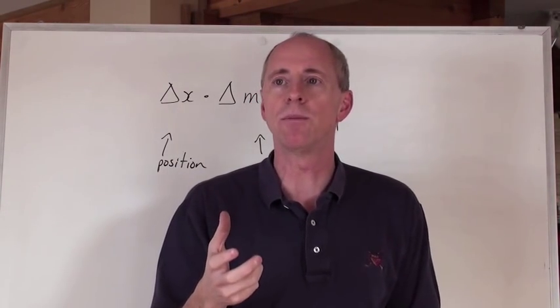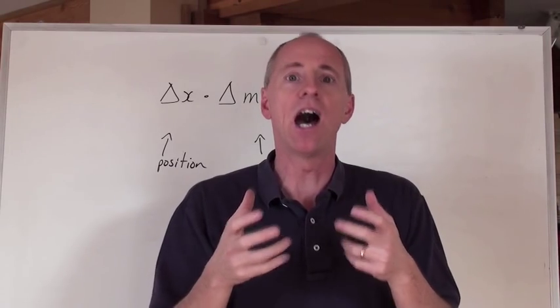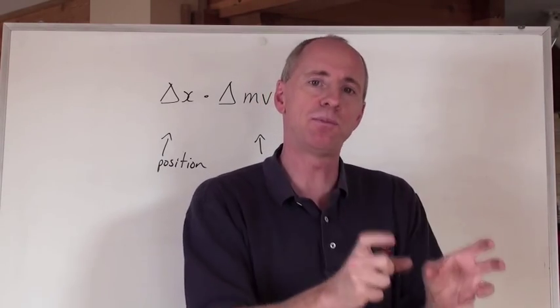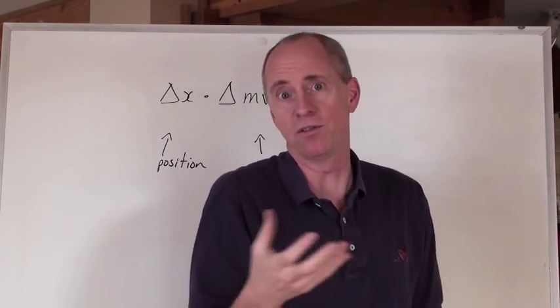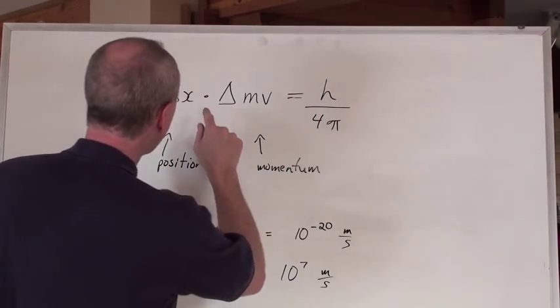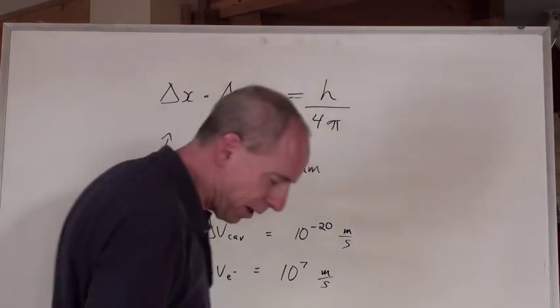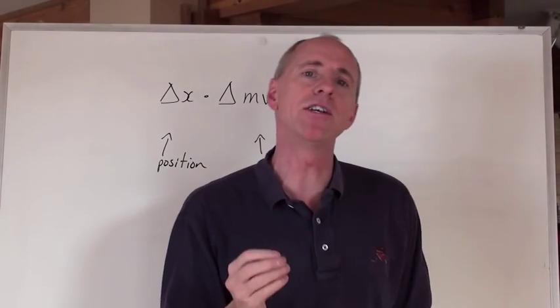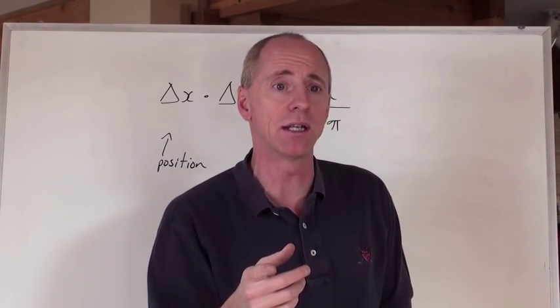Say you wanted to determine the uncertainty in the speed of a car, a typical vehicle. Okay, well, if you actually know what the position is, and by the way, we can actually measure on this planet quite accurately, well, I'll say that,